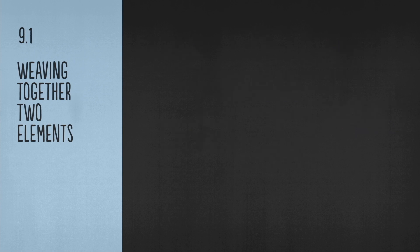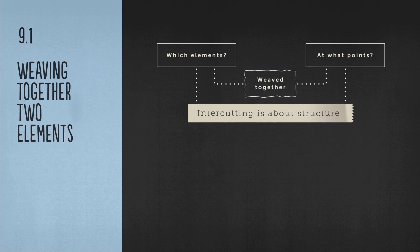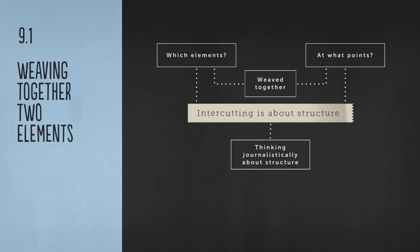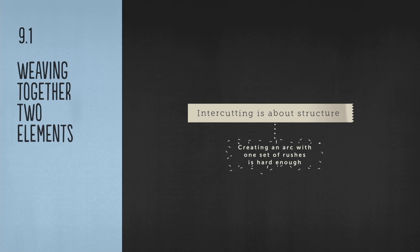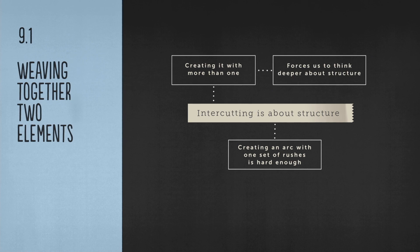First and foremost, intercutting is all about structure. Which elements, and at what points they are weaved together within our sequence, requires us to think journalistically about how we construct that interweaving. Creating a narrative arc with one set of rushes is one thing. Creating it with more than one requires us to think a lot deeper about structure. That is the creative part of our minds that we have to turn on.